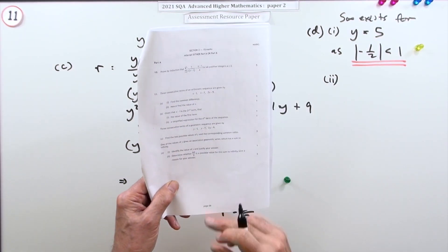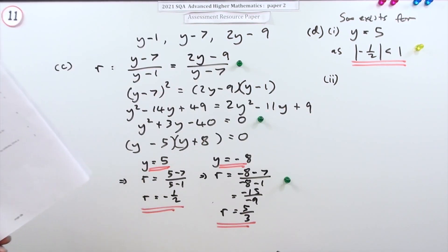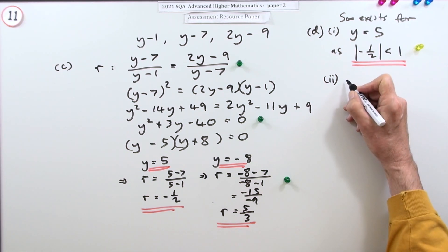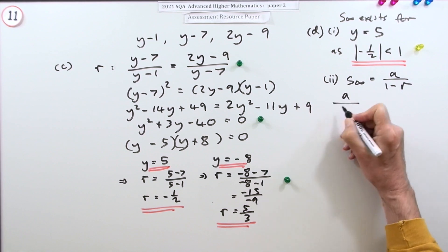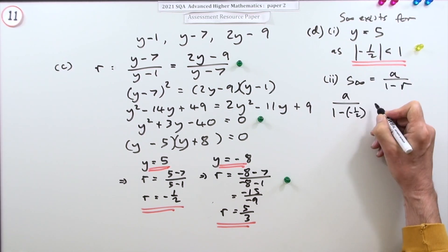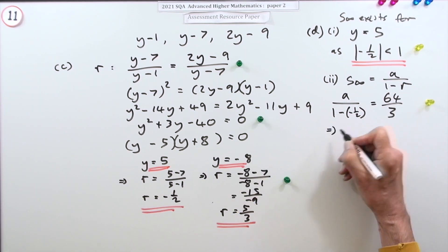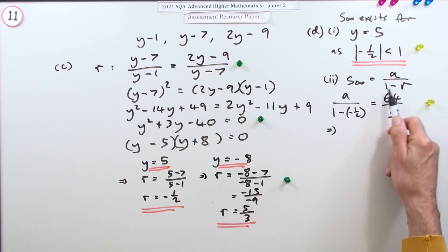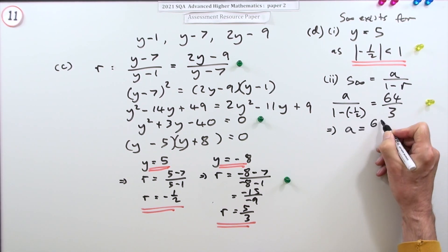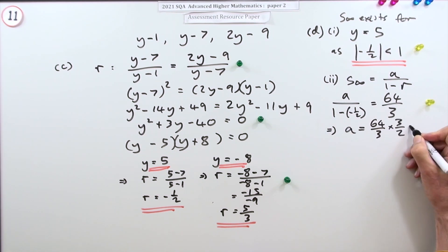Part d, part 2: could 64/3 be a possible value for this sum to infinity? The sum to infinity formula is a over (1 minus r). With r equal to negative one half, that gives a over (1 minus negative one half) = a over (3/2). Setting this equal to 64/3: a divided by 3/2 equals 64/3. Multiplying both sides by 3/2 gives a equals 32. So the first term that would produce a sum to infinity of 64/3 would be 32.